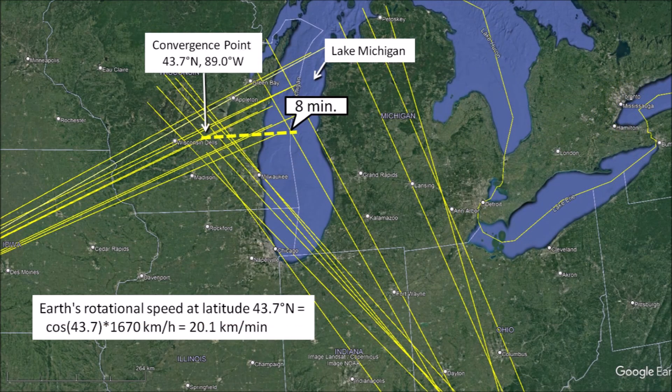The Earth rotates eastward 0.25 degrees of arc for every minute of flight time. To compensate for the rotation of the Earth at the latitude of the convergence point, the point from where the projectiles were launched needs to be adjusted eastward by about 20 km per minute of flight time. The dashed line indicates that a flight time of 8 minutes would have placed the point of origin of the projectiles that made the basins in the middle of Lake Michigan.